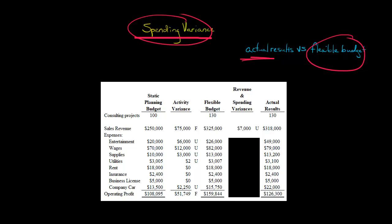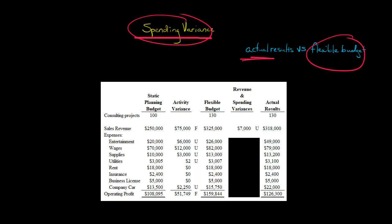As we covered in our video on putting together a flexible budget, we have to adjust the planning budget to ask: what should all these expenses have been, assuming we had 130 projects instead of 100? Because if we have 30 more projects than expected, it makes sense that we'd have more wages expense, more supplies expense, and so forth. So the flexible budget shows what the budget should have been given that we had 130 projects.